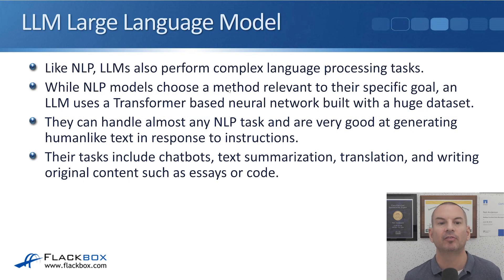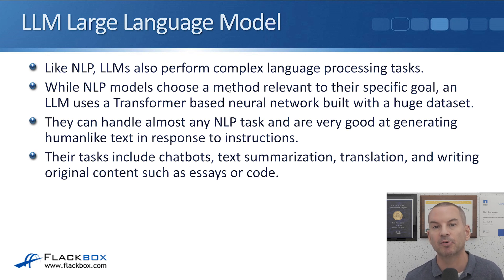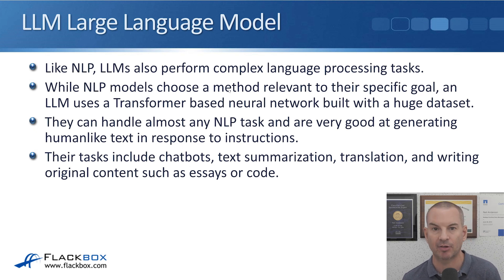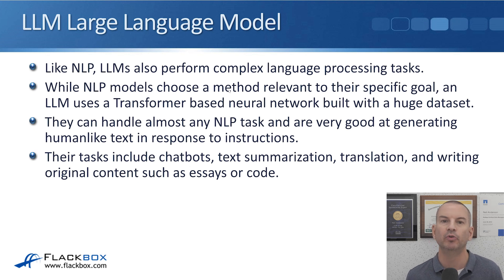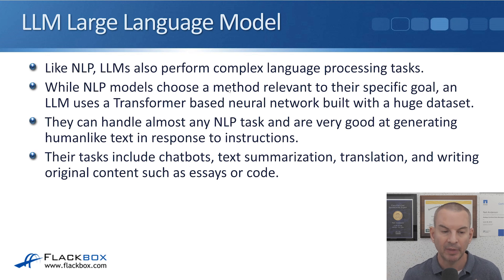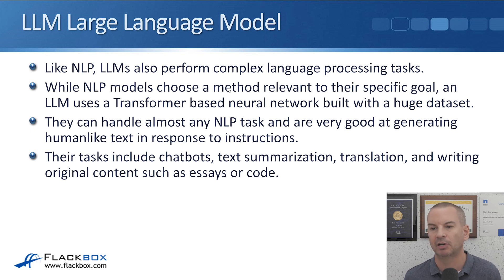Like NLP, LLMs — large language models — also perform complex language processing tasks. While NLP models choose a method relevant to their specific goal, an LLM always uses a transformer-based neural network built with a huge dataset — that's what classifies it as an LLM. LLMs can handle almost any NLP task and are very good at generating human-like text in response to instructions. Their tasks include chatbots, text summarization of longer articles, translation, and writing original content such as essays or programming code.